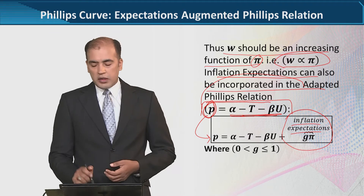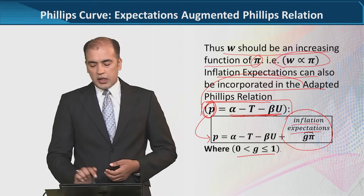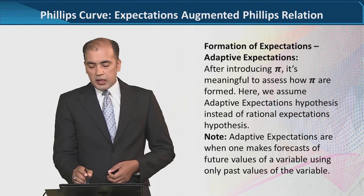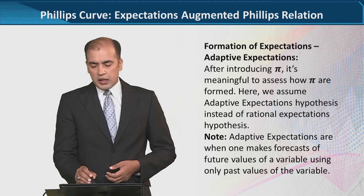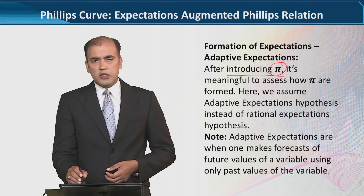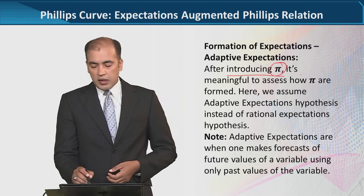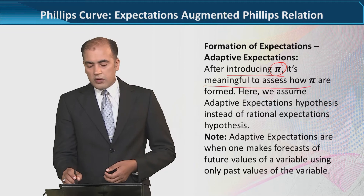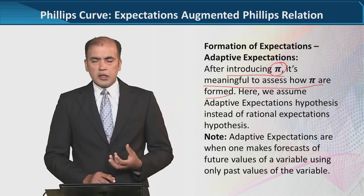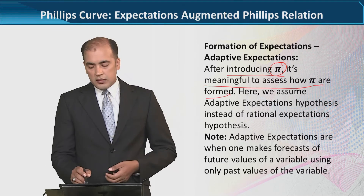The parametric restrictions for g are provided. After introducing pi — after we have introduced expectations — it is meaningful to assess how these pi expectations are formed. We will now look at how expectations are formed.